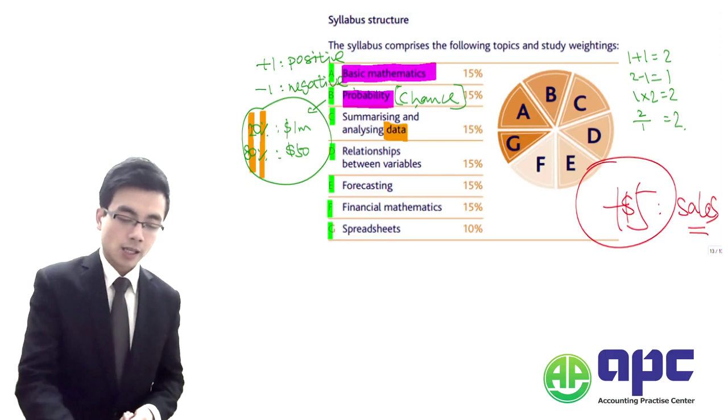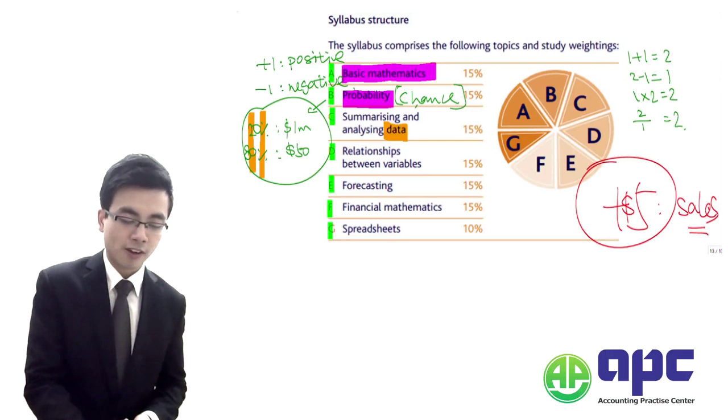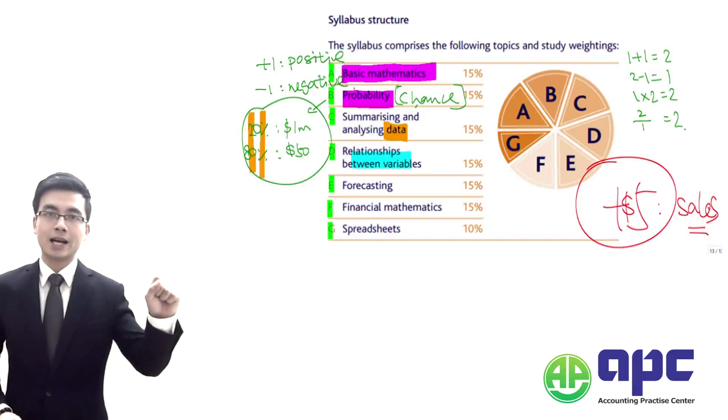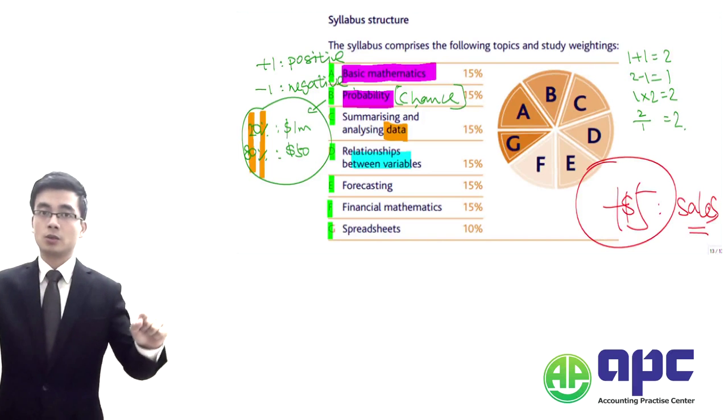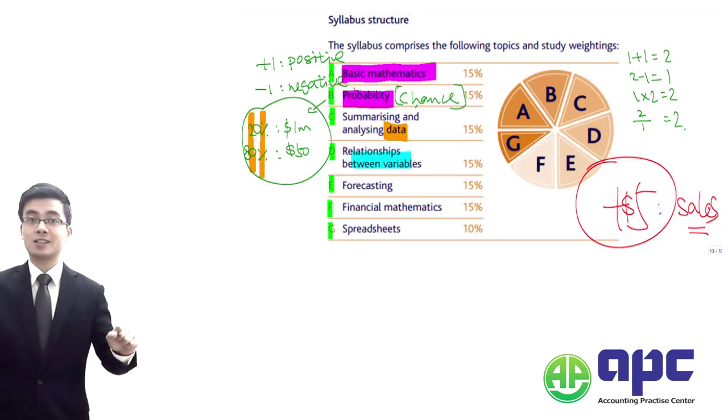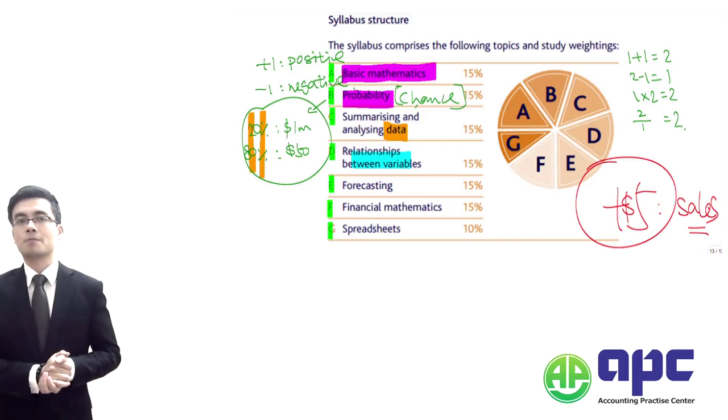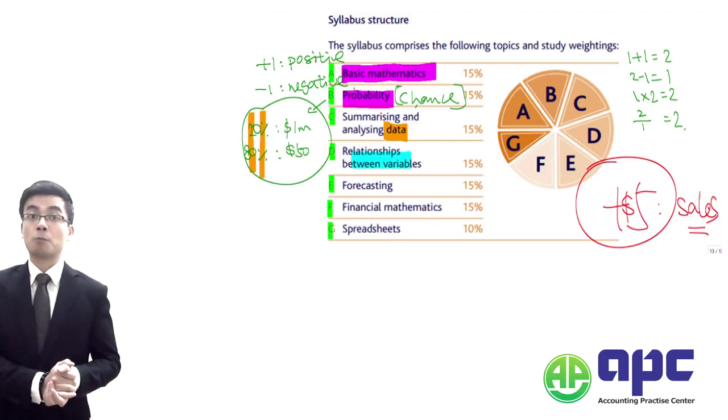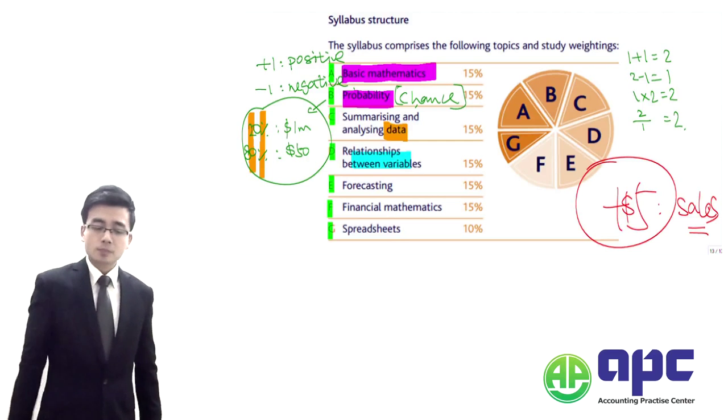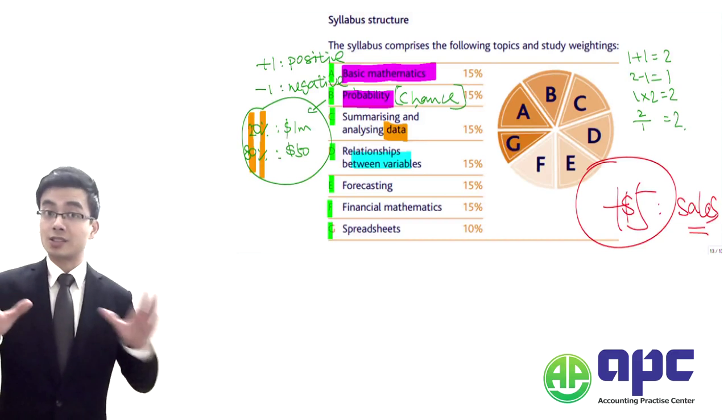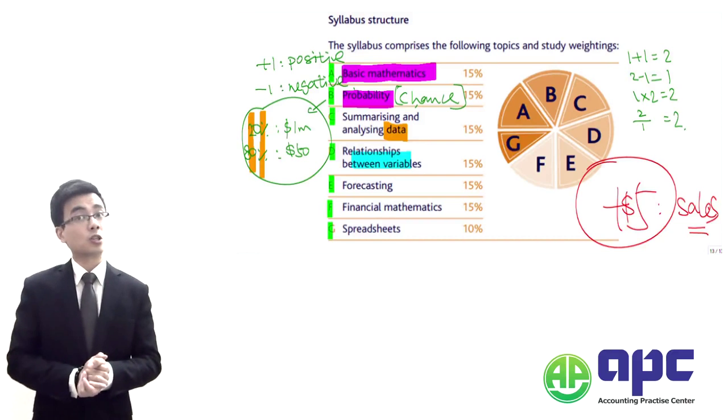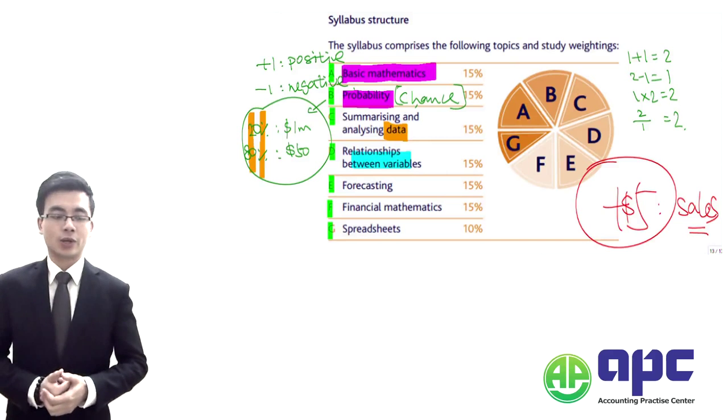Section D then is related to the relationship between the variables. One of the examples I like to give my students is all about the umbrella and ice cream. So in summer, we can sell lots of these ice creams. But in winter, we're not going to sell as much ice cream as we can, such as in summer. But in winter, for example, we're going to sell quite a lot of these umbrellas. So, I mean, the relationship between variables is what we're going to see whether or not they will be correlated. So we're going to use quite a lot of these tools to help us doing that in section D.